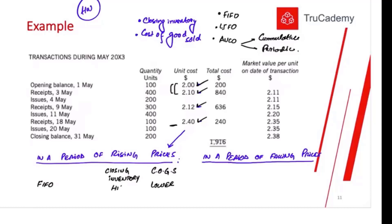After that, in LIFO — last in, first out — for production we use the expensive units first, the units with the higher prices first. So obviously the cost of goods sold will be higher, and the inventory will then be based on the cheapest units, like two dollars or 2.10. So the closing inventory will be lower.